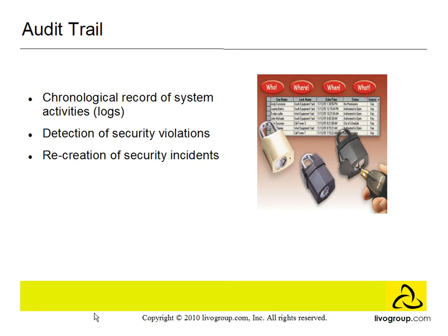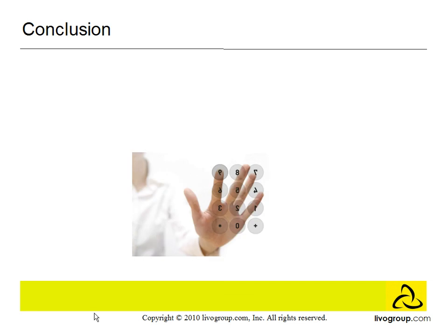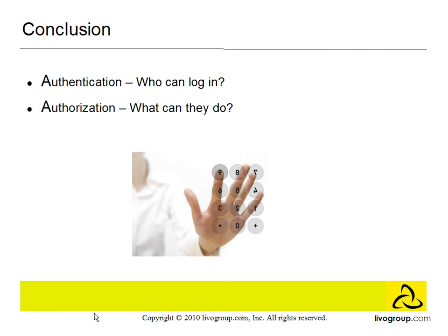In conclusion, access control systems provide three essential services. Authentication determines who can log in. After authentication, authorization determines what the subject can do — serving as a map of where the subject can and cannot go. And finally, accountability maps the actions of the subject to the object. This concludes the introduction to access control. Thank you very much.